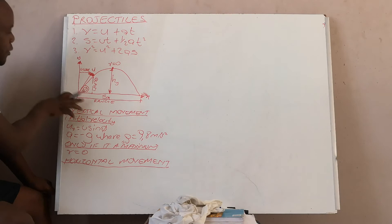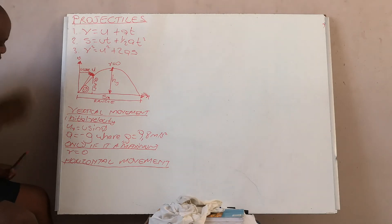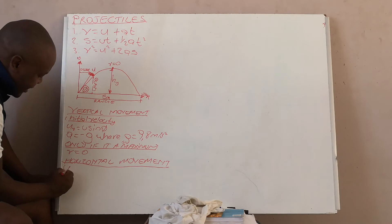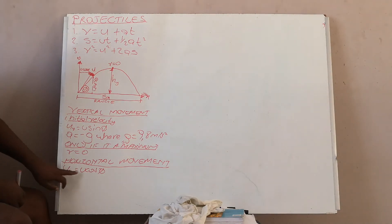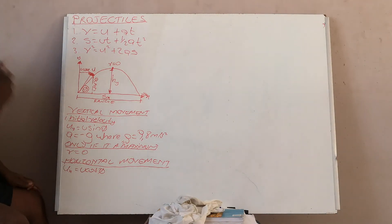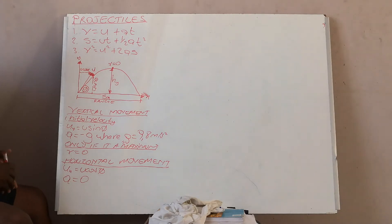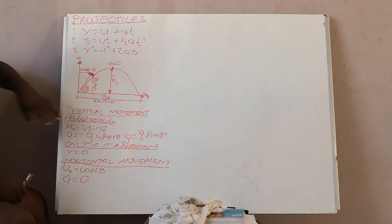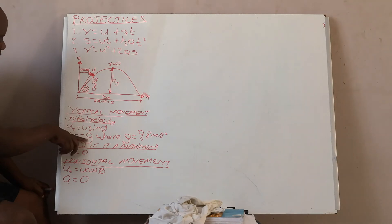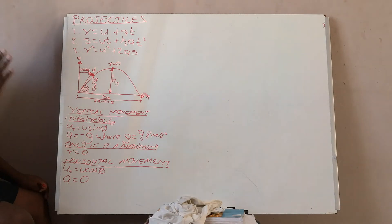For horizontal movement: your initial velocity is always U cos theta — you must always use it as U cos theta. Also, for horizontal movement you assume your acceleration is zero. You do not use negative g because the horizontal component is assumed constant and straight when you resolve into components. So acceleration for horizontal movement is always zero.